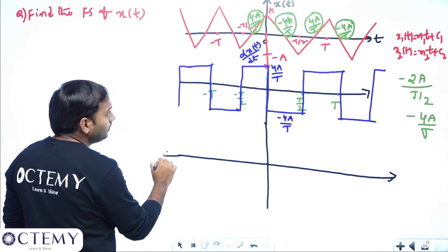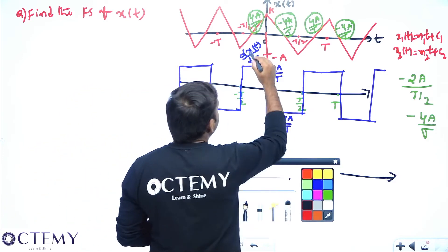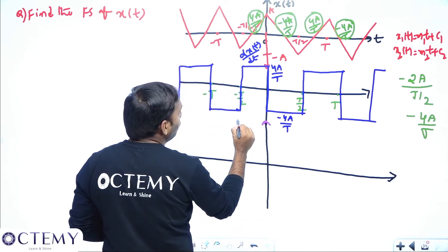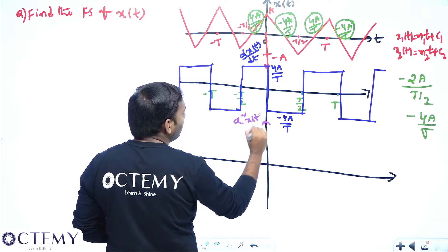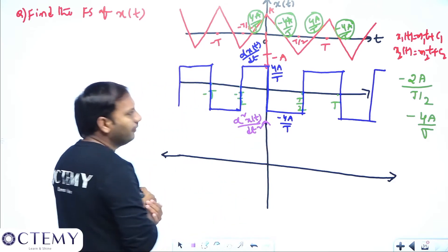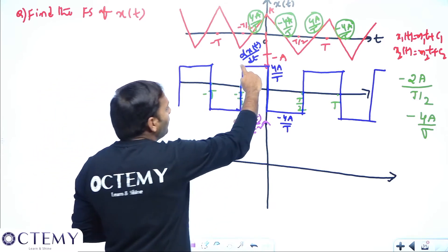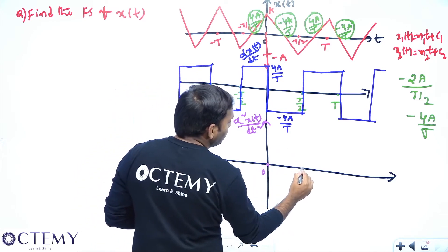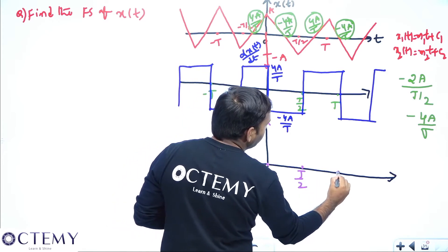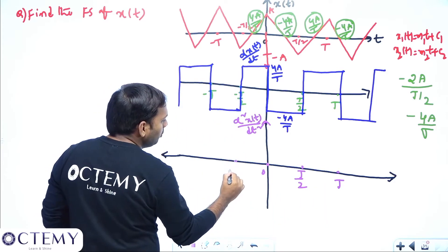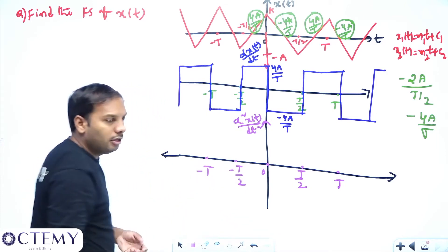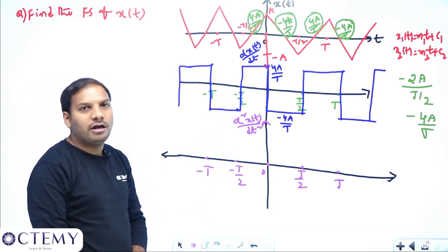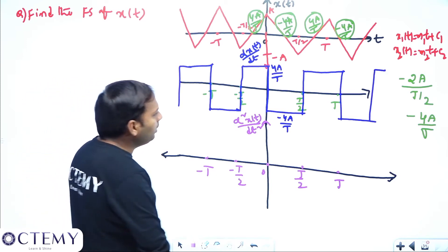I am now calculating d²x(t)/dt². The differentiation of constants gives 0. But the timing values — the T/2 and -T/2 points — are very very important in the Fourier series. If you miss this logic, the answer will be wrong. You must be very cautious when writing the timing values of the signals.